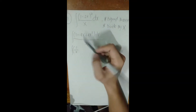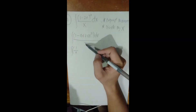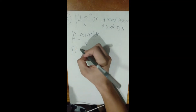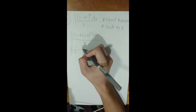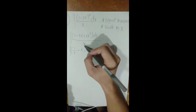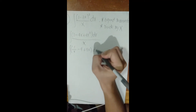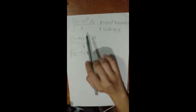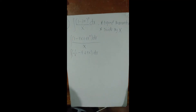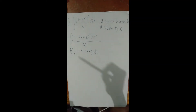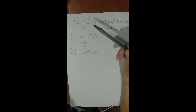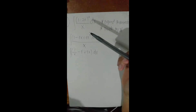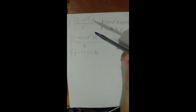Now we divide each term in the numerator by x: 1/x − 4x/x + 4x²/x = 1/x − 4 + 4x. So the integral becomes the integral of (1/x − 4 + 4x) dx. We apply the distributive property to the integral sign: integral of dx/x, minus integral of 4 dx, plus integral of 4x dx.